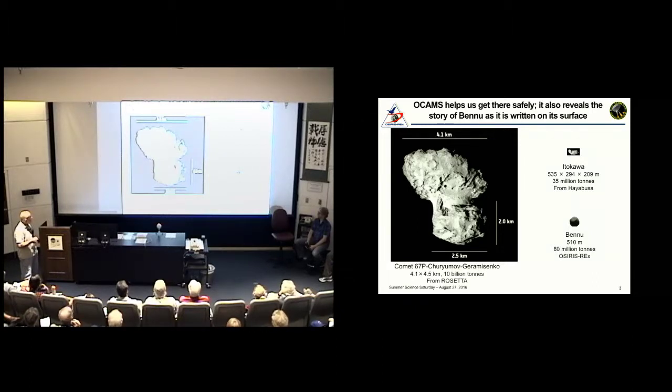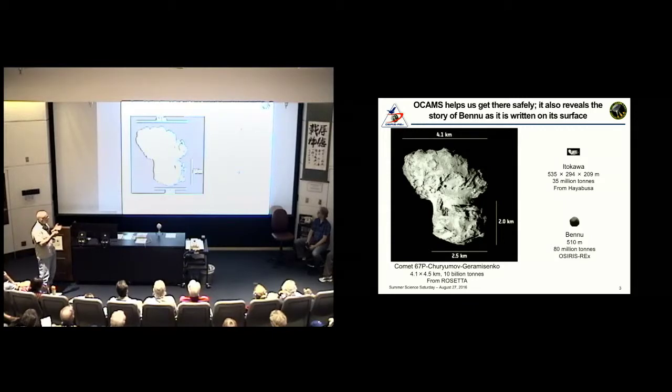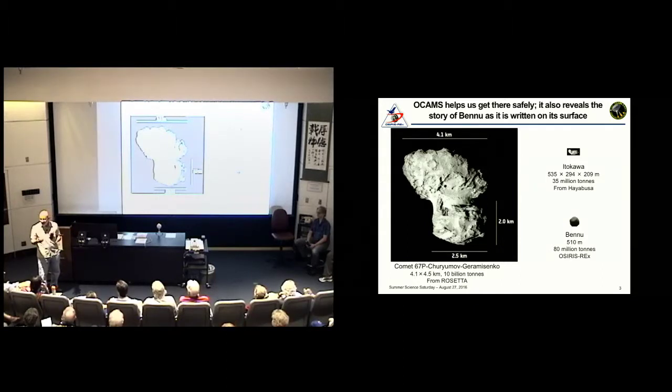The OCAM suite will make the job of gathering a sample from the surface of this asteroid a lot safer and a lot more of a low-risk operation. I've shown Bennu here in comparison with two other objects that were recently visited by Earth probes. This is Churyumov-Gerasimenko, the periodic comet 67P, which was visited by the Rosetta mission. And this is the near-Earth asteroid Itokawa, which was visited by the Japanese probe Hayabusa.